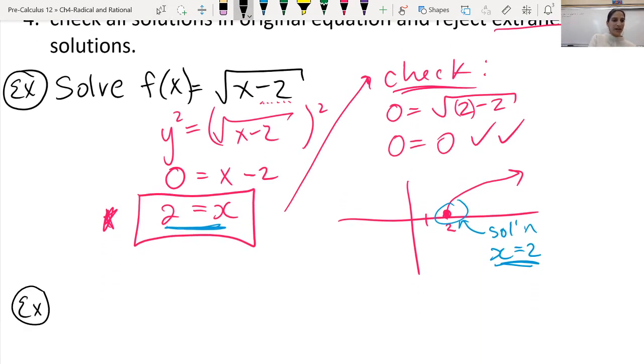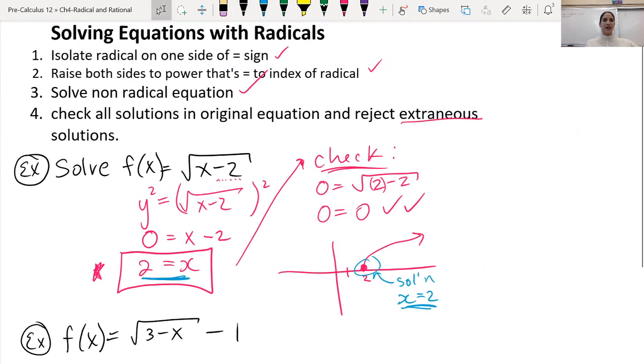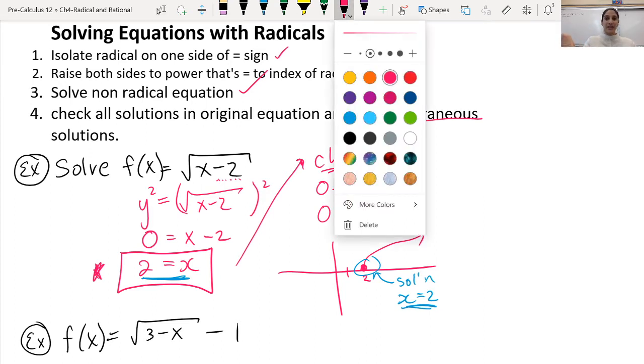Let's take a look at another one that has a little bit more going on. So let's say we have f(x) equals the root of 3 minus x, and the whole thing is minus 1. So now when we go back to our little set of rules here, solve the equations with radicals, and it gives us our steps here.